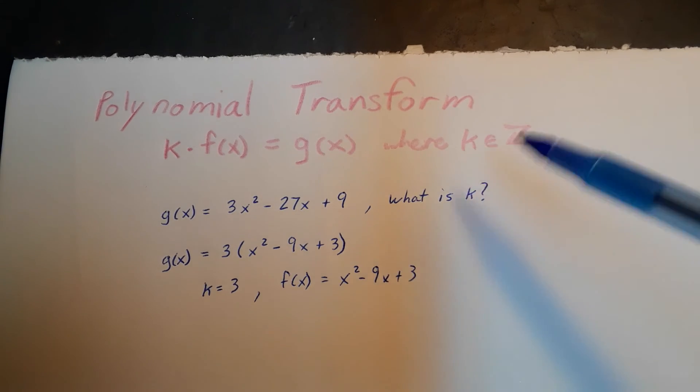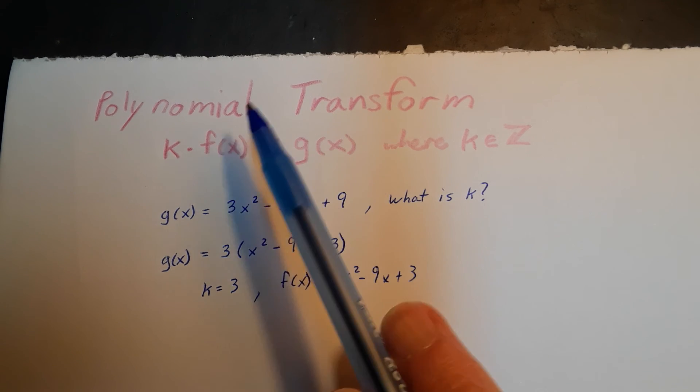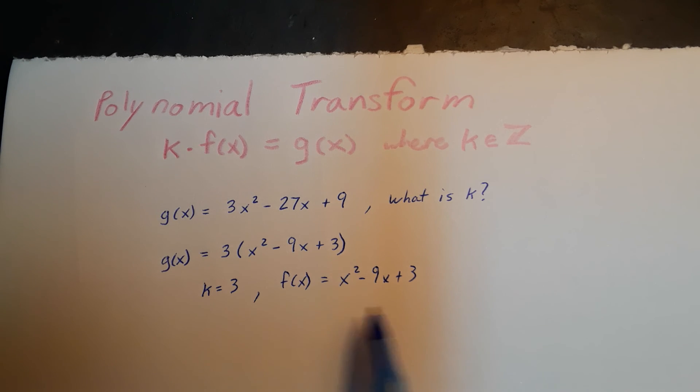We weren't necessarily asked for f of x up here, but it is a byproduct of solving for k, so I've gone ahead and written that down. And so we have figured out how this function was transformed into this function by multiplying by this integer.